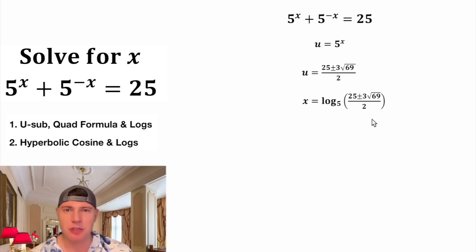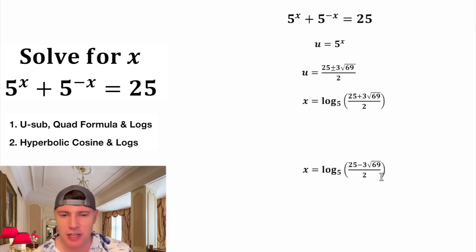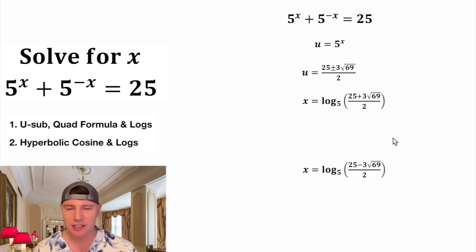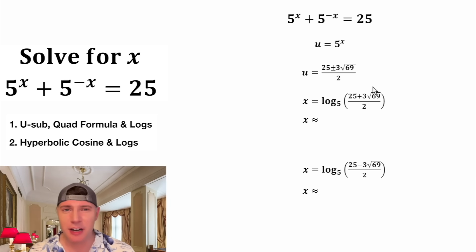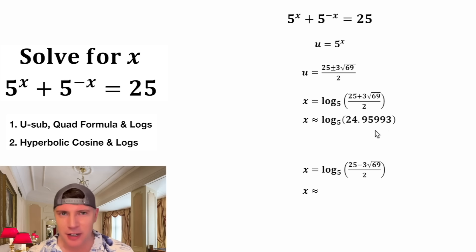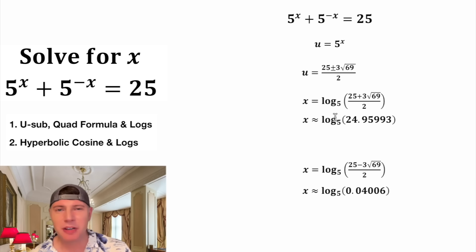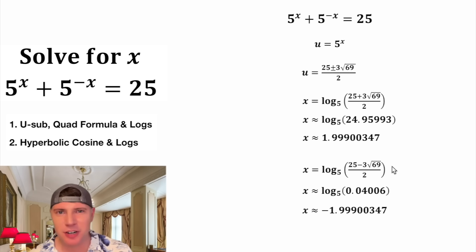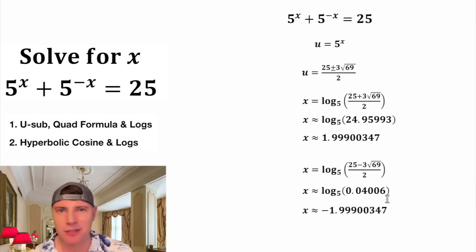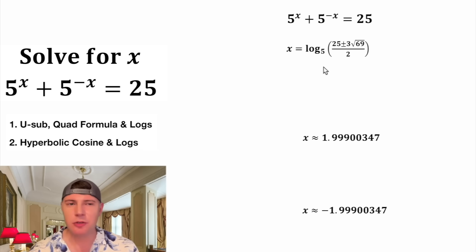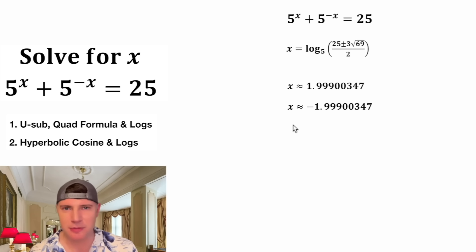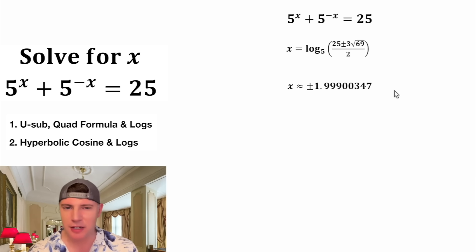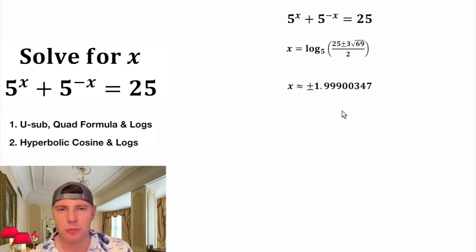Since this has a plus or minus in it, we're going to have two possible answers — the plus version and the minus version. These are the exact values of x. I don't believe they can be simplified any further, but we can get approximate values. Plugging into a calculator, we get approximately 24.95993 and 0.04006 for the two u values, and approximately positive or negative 1.99900347 for x. These are the two exact values and the two approximate values. We can combine these into a plus or minus.